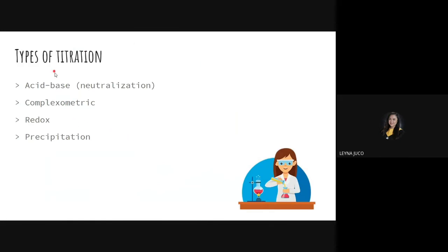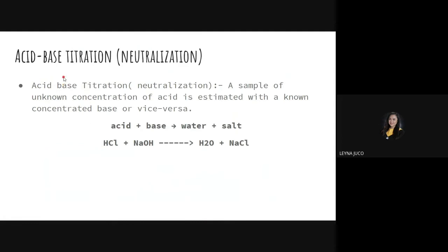The different types of titration: what we did earlier is acid-base titration, also called neutralization — because when you add an acid to a base, the result is neutral. A sample of unknown concentration of acid is titrated with a known concentration of base, or vice versa. The chemical equation shows: acid plus base equals salt. These are the visual indicators used for acid-base titrations.